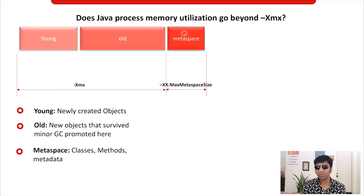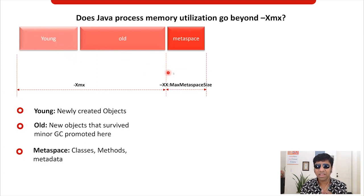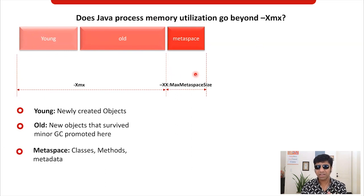After that, there is one more generation called metaspace. This metaspace is the region where the metadata definitions — that is your class definitions, dot class files, and the method definitions — required to execute your application are stored. So they are outside the XMX that you specify, and you can govern the size of this region by setting the max metaspace size.